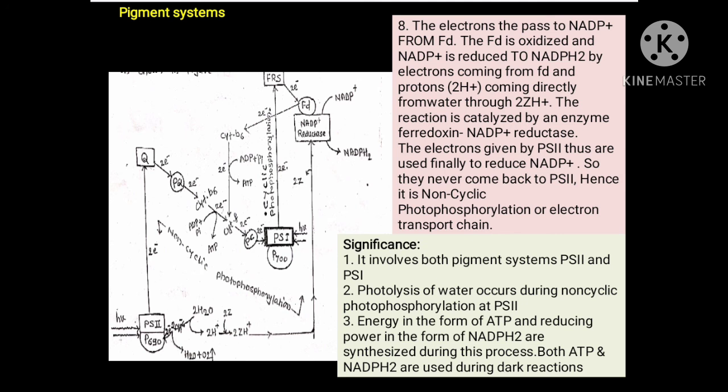The significance of non-cyclic photophosphorylation: first, it involves both pigment systems, photosystem second and photosystem first. Second, photolysis of water occurs during non-cyclic photophosphorylation at photosystem second. Third, energy in the form of ATP and reducing power in the form of NADPH2 are synthesized during this process. Both ATP and NADPH2 are utilized during the dark reactions.